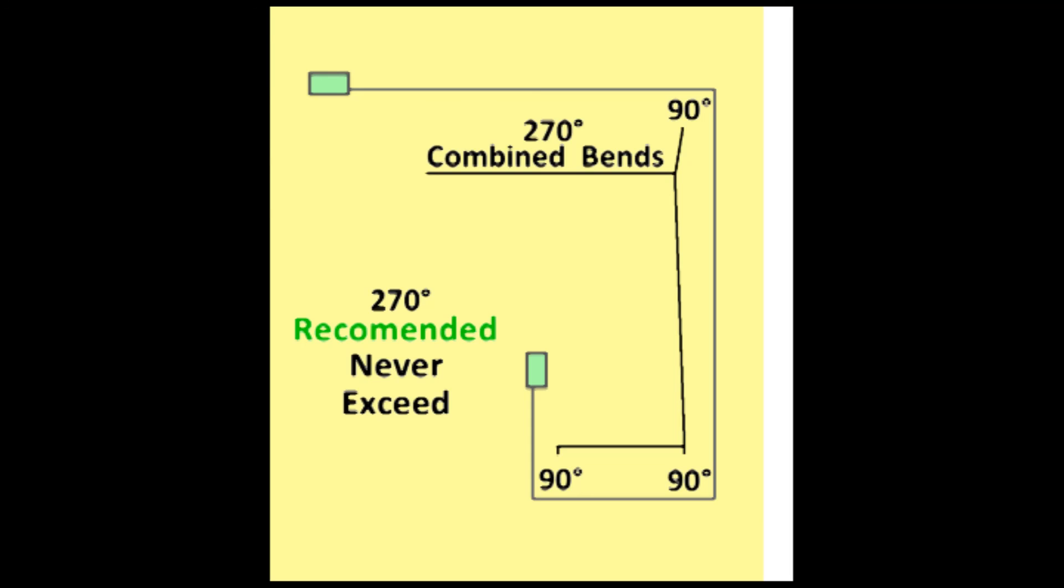Put in another J-Box, or pull box, when you have a long run, or are pulling close to your wire fill limit.